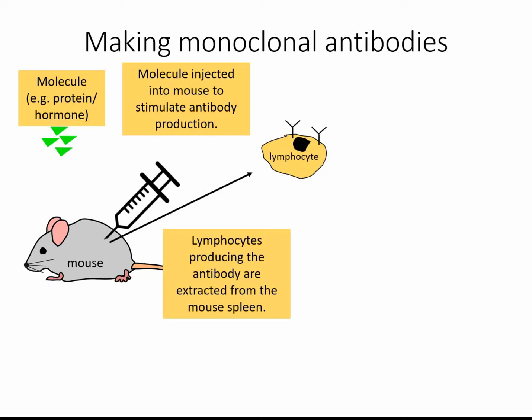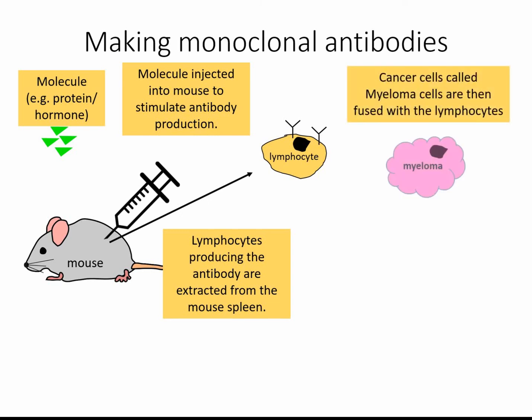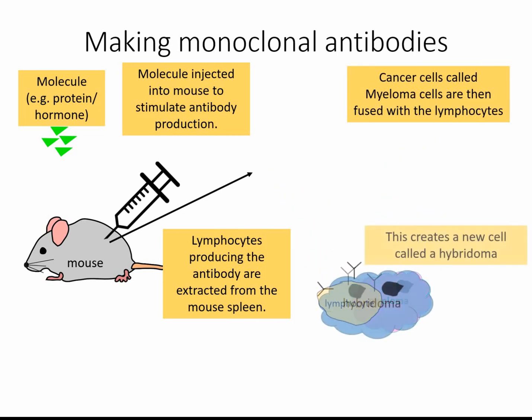The spleen is an area where lots of white blood cells are stored. Now, this lymphocyte could produce lots of antibodies; however, lymphocytes won't divide outside of the mouse's body forever — in fact they can't, and they'll just die. So what we need to do is make them immortal. We take myeloma cells, which are cancer cells, and these are cells that can divide uncontrollably — that's what cancer is.